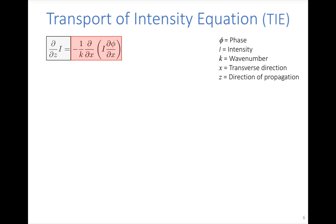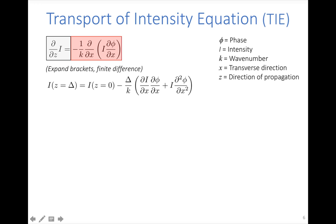To understand this more intuitively, we expand the brackets and take a finite difference. This tells us that the intensity seen at some distance z equals delta downstream of the sample is the same image seen immediately after the sample at z equals zero, plus extra intensity variations that depend on both the intensity and phase of the wave field.